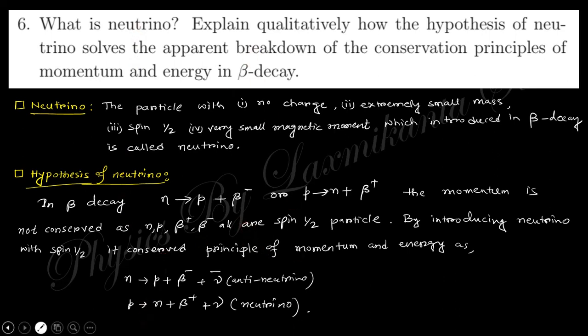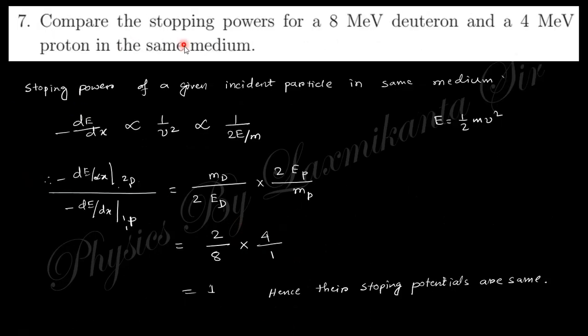Next, compute the stopping power for 8 MeV deuteron and 4 MeV proton in the same medium. So actually stopping power is proportional to 1/v², that is v² is 2E/m. So if you compare for deuterium and proton, finally you will obtain this relation. So this is the stopping potential for this one. This is one, so you can say the stopping potential for these two particles are the same.